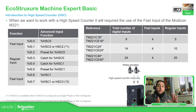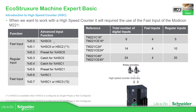Here you can see the assignation of the digital inputs of the M221 for fast inputs. We have the first two inputs and then the last two — inputs six and seven — which are related to high-speed counter one, and inputs zero and one are for high-speed counter zero.